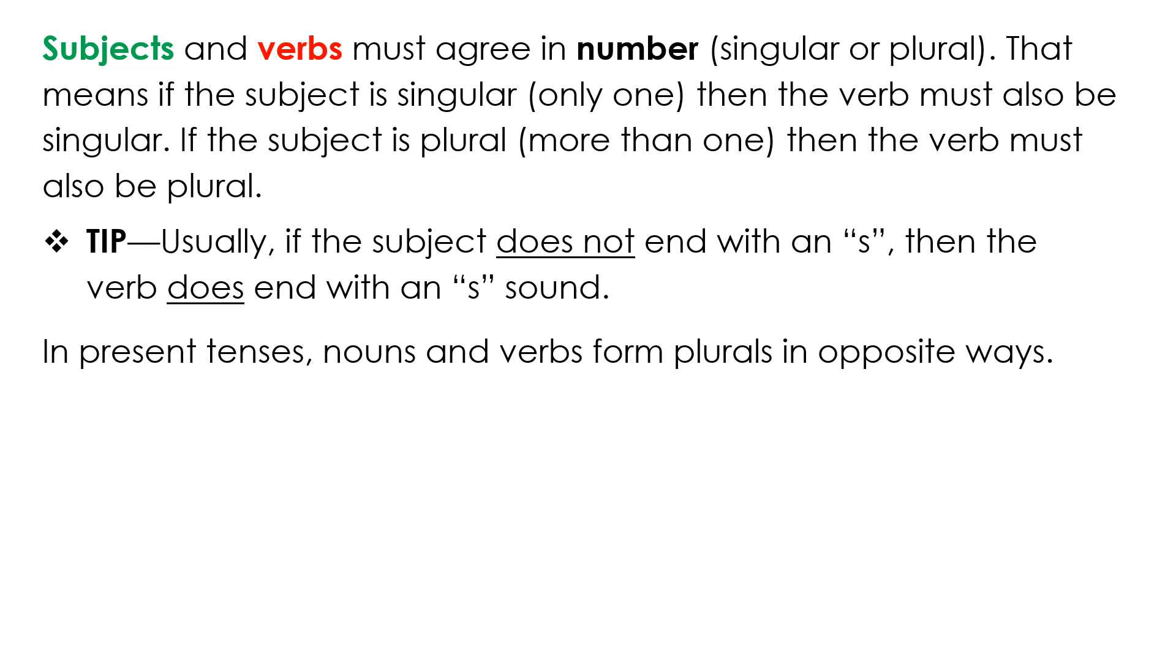In present tenses, nouns and verbs form plurals in opposite ways. A motivated learner studies on his own time. This is the singular sentence. We're talking about a single learner. Studies has the 's' sound, but learner does not.